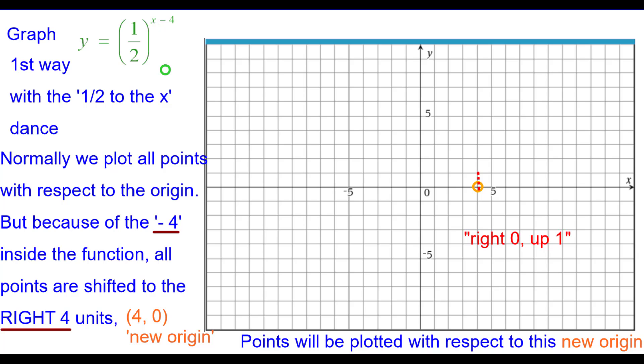For example, right 0 up 1, because one-half raised to the 0 power is equal to 1. Right 1 up a half; one-half raised to the first power is a half. Right 2 up a quarter. Right 3 up an eighth.